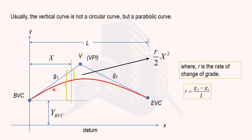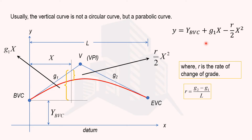To find the reduced level at a point on the curve, we need the distance from datum to that point. The distance from datum to BVC is y_BVC. We add the tangent rise G1·x, then subtract the offset (r·x²)/2. So the final equation is: y = y_BVC + G1·x − (r/2)·x². This allows us to calculate the reduced level at any point on the vertical curve. This is for the crest curve; for the sag curve the equation is the same but the offset term becomes positive instead of negative.